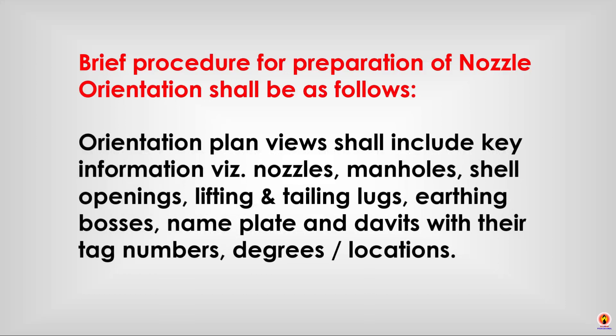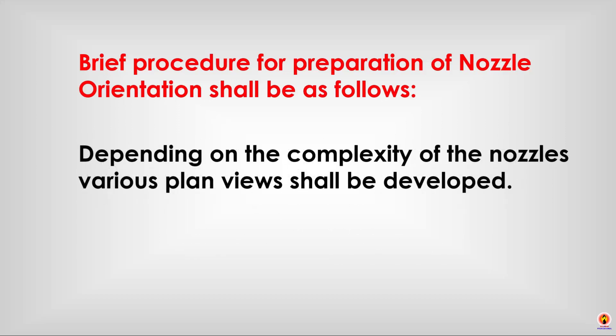The orientation plan view shall include key information such as nozzle tag numbers, manholes, shell openings, lifting and tiling lugs, earthing buses, nameplates and davits with their tag numbers, degrees, and locations. Depending on the complexity of the nozzle arrangement, various plan views shall be developed.